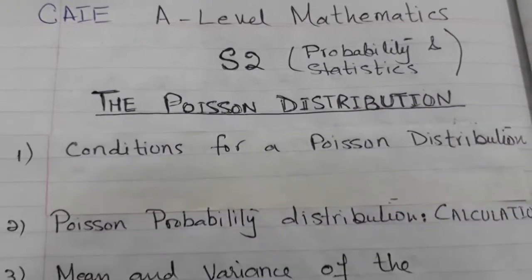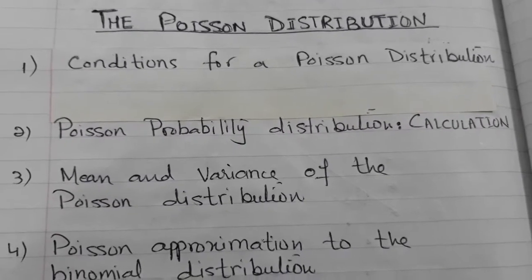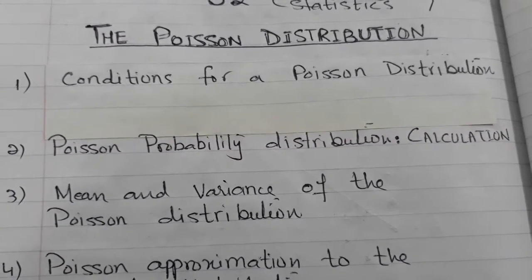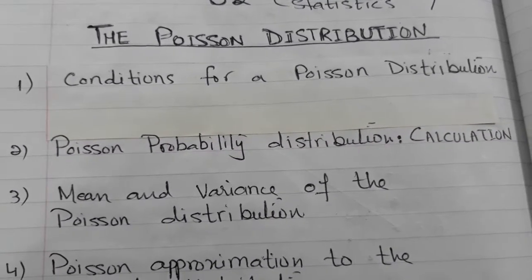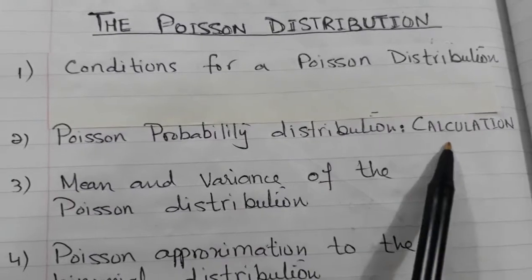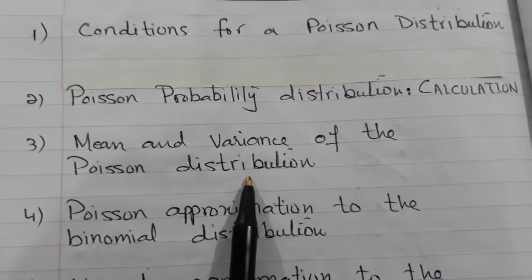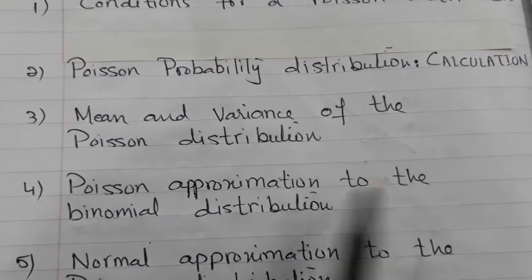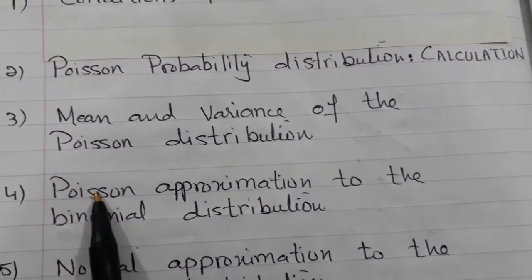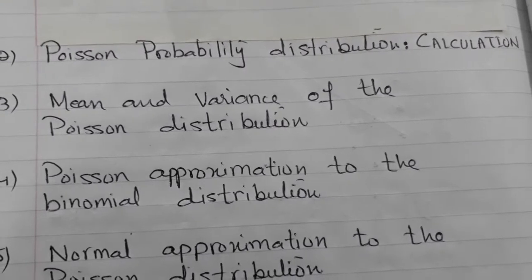Before we start, I would like you to know what the syllabus requirements are, and then each point I will explain with the help of examples taken from past paper questions. We should know the conditions for a Poisson distribution — what conditions the random variable X must satisfy if we are modelling it by a Poisson distribution. Then how to calculate the Poisson probability distribution formula. We will also see Poisson approximation to the binomial distribution, where the question is given in binomial form but solved using Poisson distribution, and certain conditions must be checked.